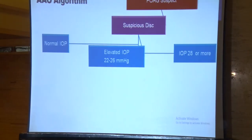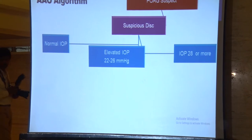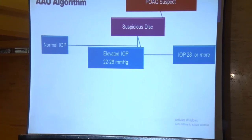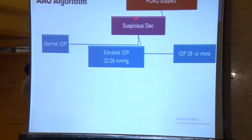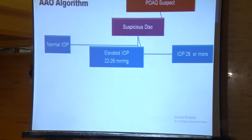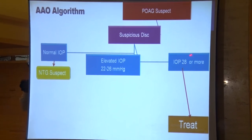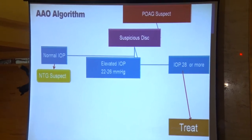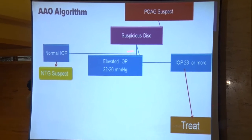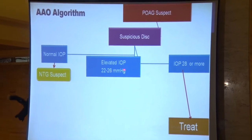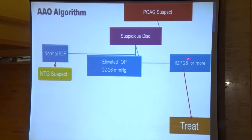Now we come to the American Academy of Ophthalmology algorithm for patients who are primary open-angle glaucoma suspects. Whenever we see a suspicious disc and the pressures are normal, we must evaluate these patients as NTG suspects. If the pressure is 28 mmHg or more on applanation, we definitely need to treat these patients. For patients with IOP between 22 and 26, we should not jump to start treatment immediately.